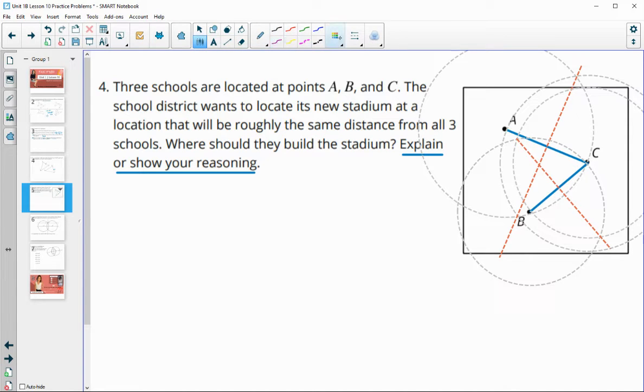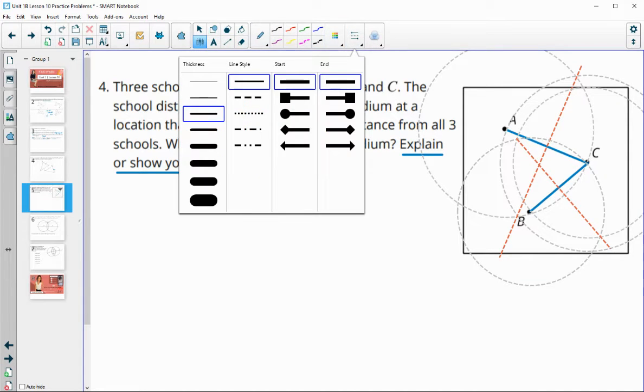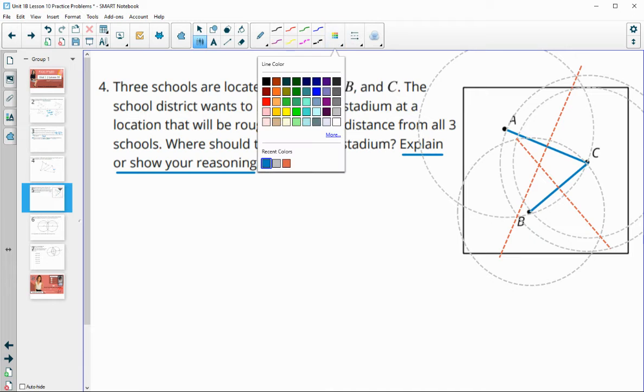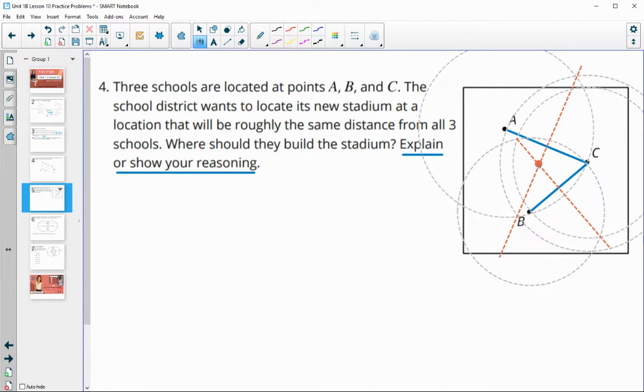This point right here, where these two perpendicular bisectors meet, is on this perpendicular bisector, so it's equidistant from A and C. This point is also on the perpendicular bisector of BC, so it's equidistant from B and C, therefore it's equidistant from all vertices. That would be the spot where they should build the stadium.